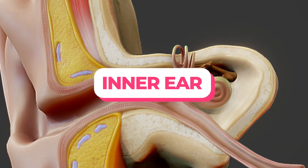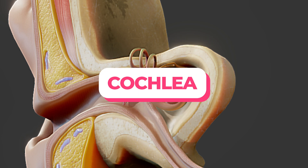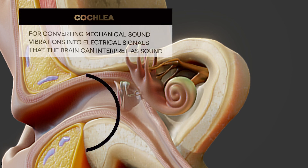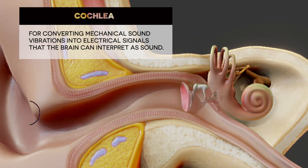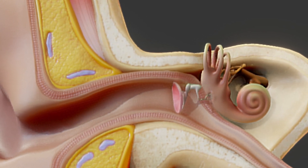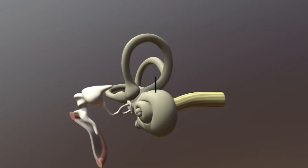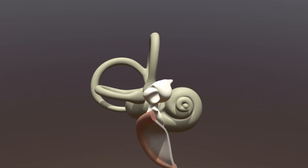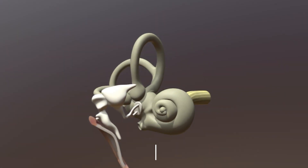The inner ear consists of the cochlea and the vestibular system. The cochlea is an intricate and essential component of the inner ear, playing a critical role in the auditory system. It is responsible for converting mechanical sound vibrations into electrical signals that the brain can interpret as sound. The cochlea is a spiral-shaped, coiled tube resembling a snail shell, making about 2.5 turns around a central bony pillar called the modiolus.